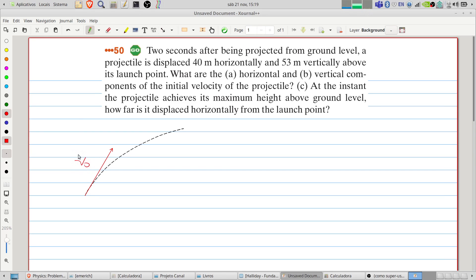V₀, the initial velocity, and after some time the projectile will pass this point. And we know that the displacement will be 40 meters here, and here we will have 53 meters. Let's use this information to solve the problem.